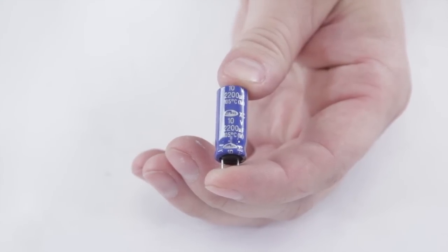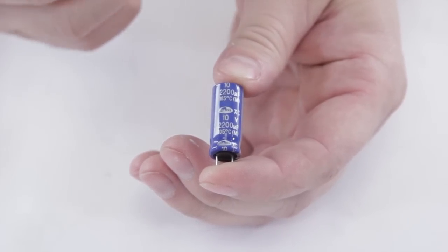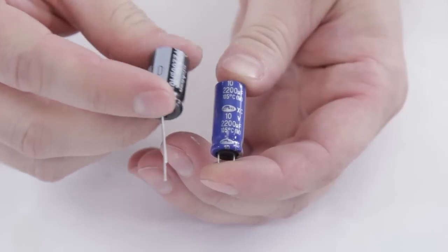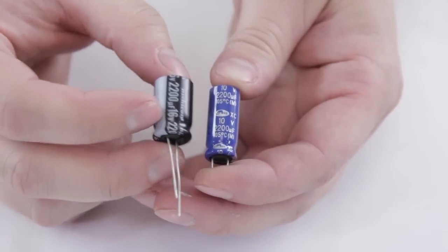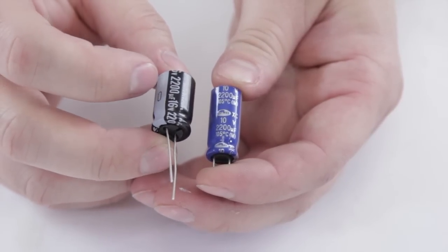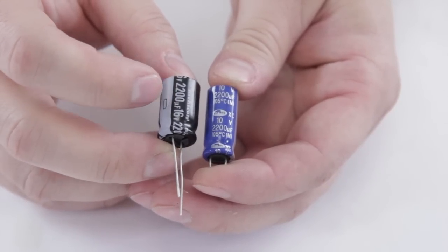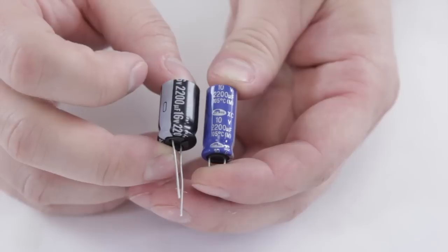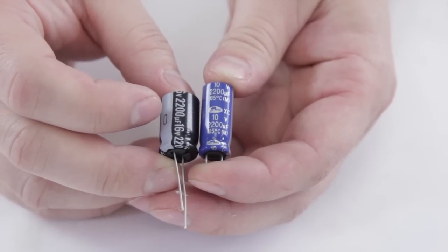And it's really important that when we get a replacement cap, we make sure we choose the same values. We can go higher if you have an 85 degree capacitor, you can go up to a 105, and you can go up in voltage a little bit, which we're doing on this one. So we've gone from 10 volts up to 16.